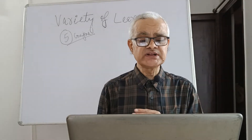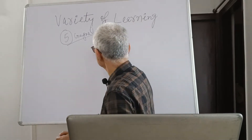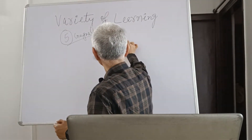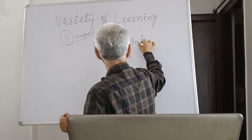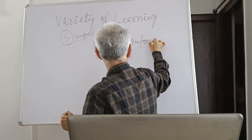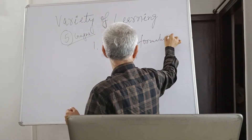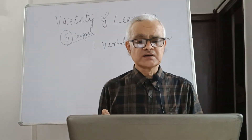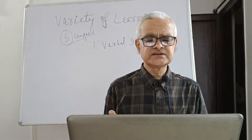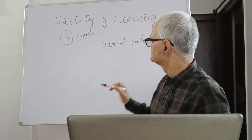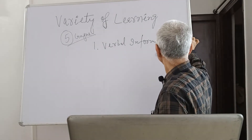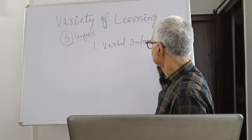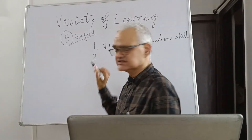The second one — so let us recall: the first one is verbal information skills. A skill is also added, so you can write verbal information skills — facts and concepts.